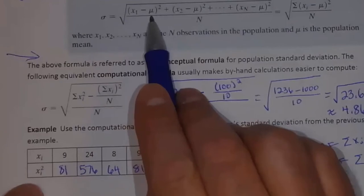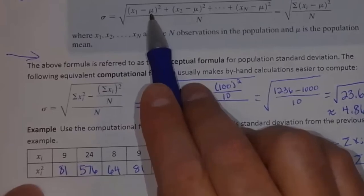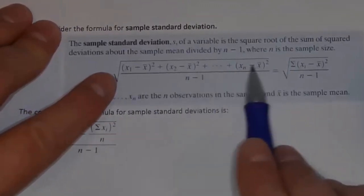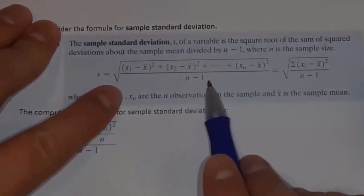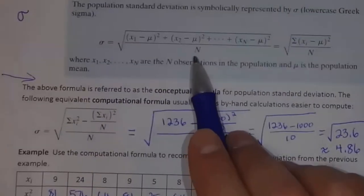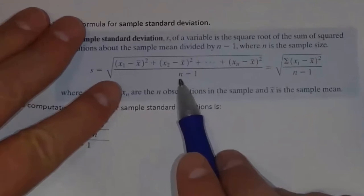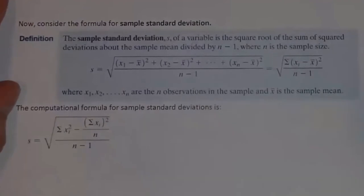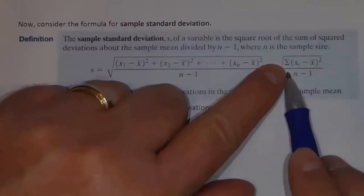So here we took each data value minus the mean, squared it, and added that up. The only technical difference is this was a mu for the mean because it was a population; this is an X-bar because it's a sample. We're going to do that for every data value. But then we divide by n minus 1, whereas in the formula for the population standard deviation, we divided by n. We're using lowercase n because it is a sample. Or using the shortcut notation: the sum of (x sub i minus x-bar) squared, divided by n minus 1.